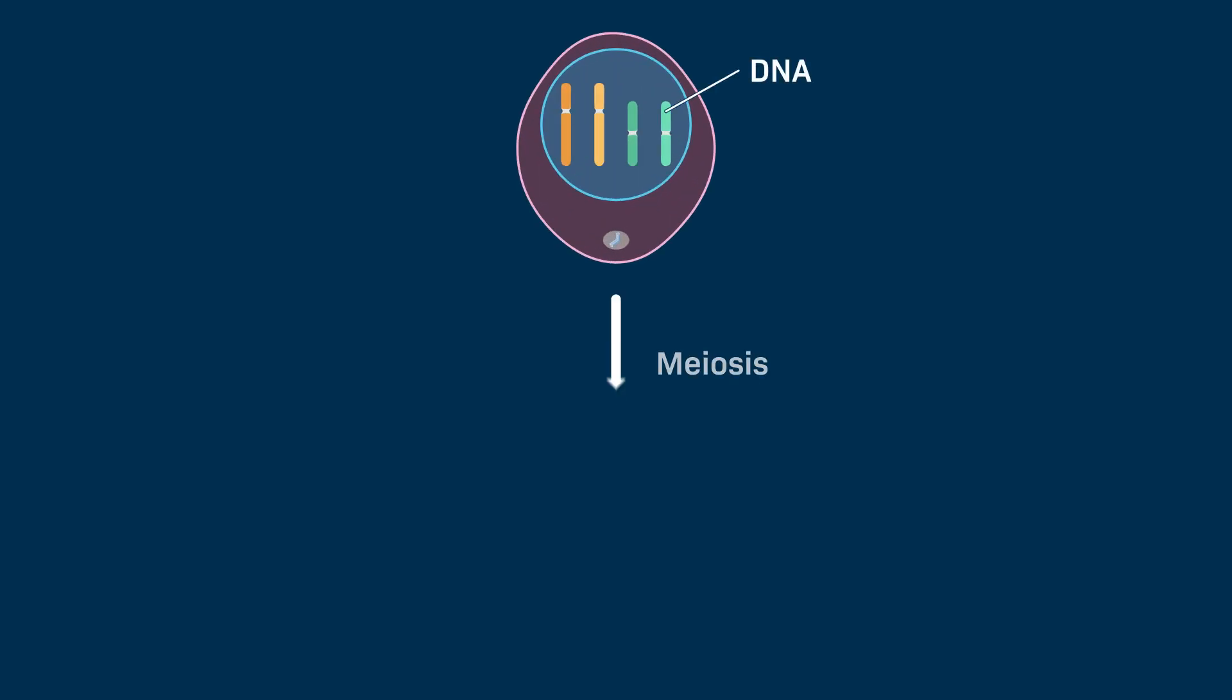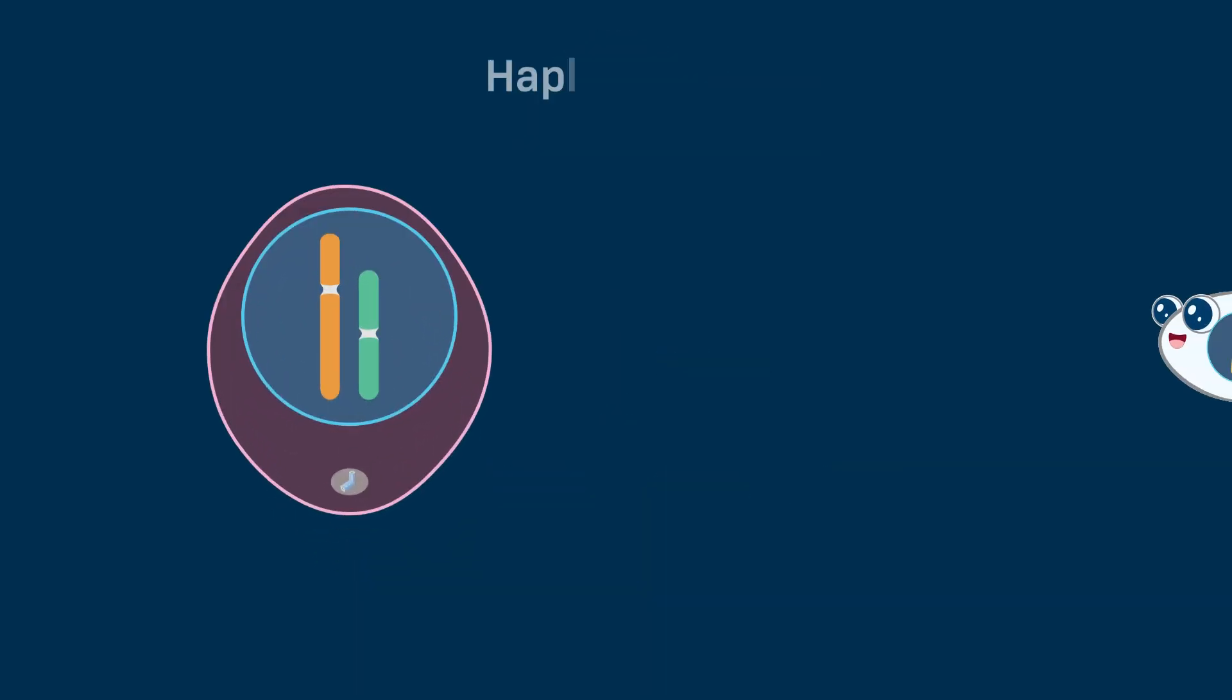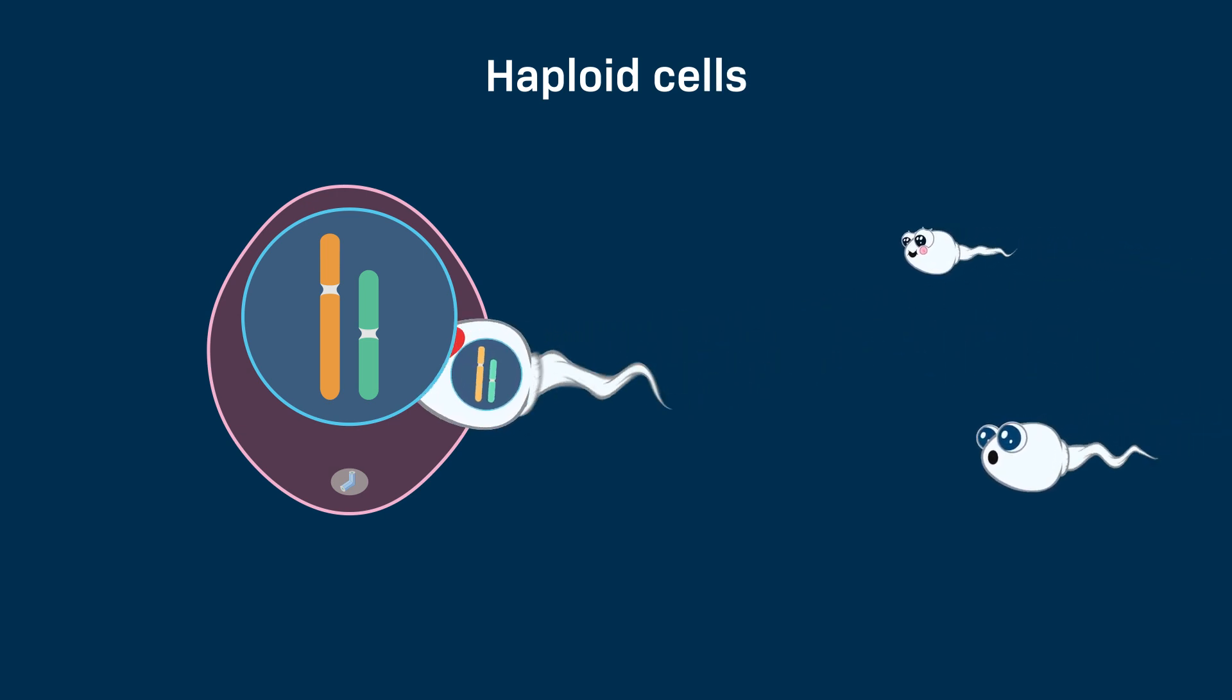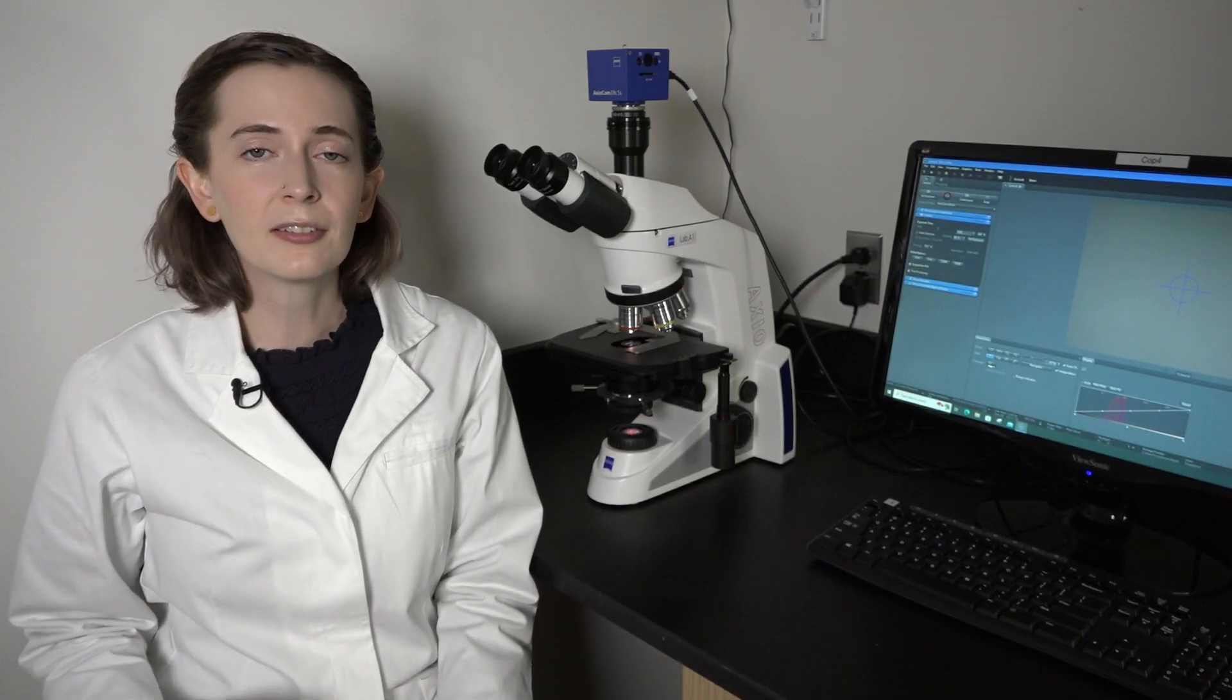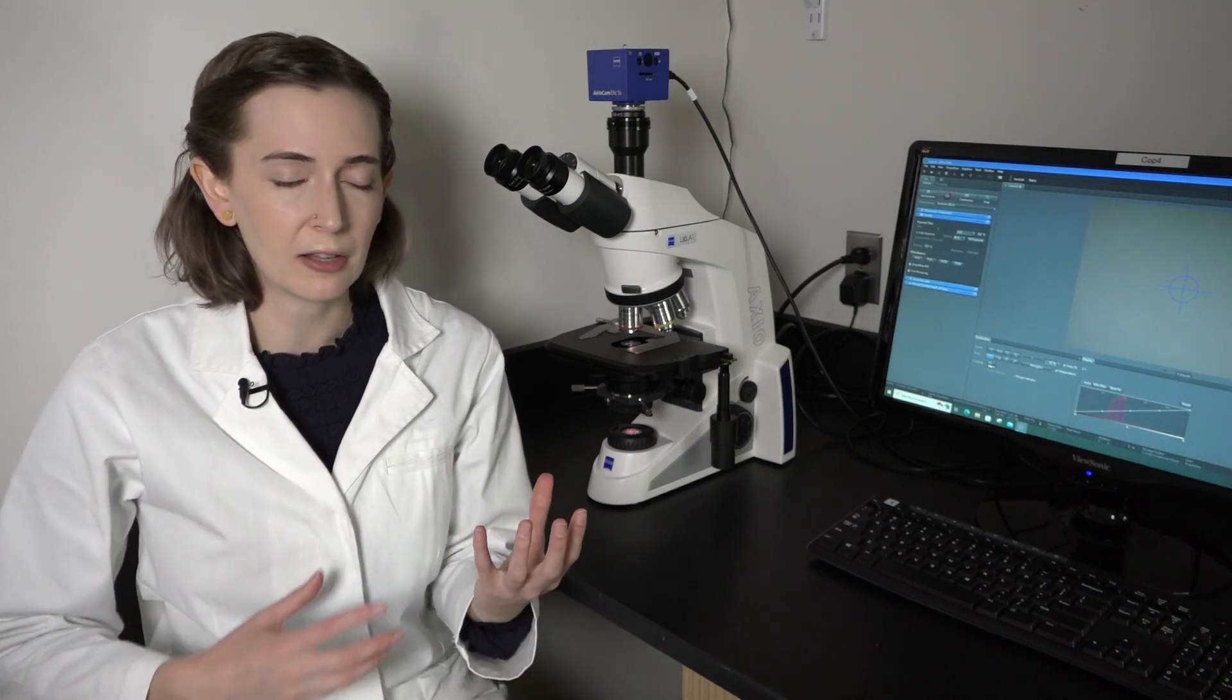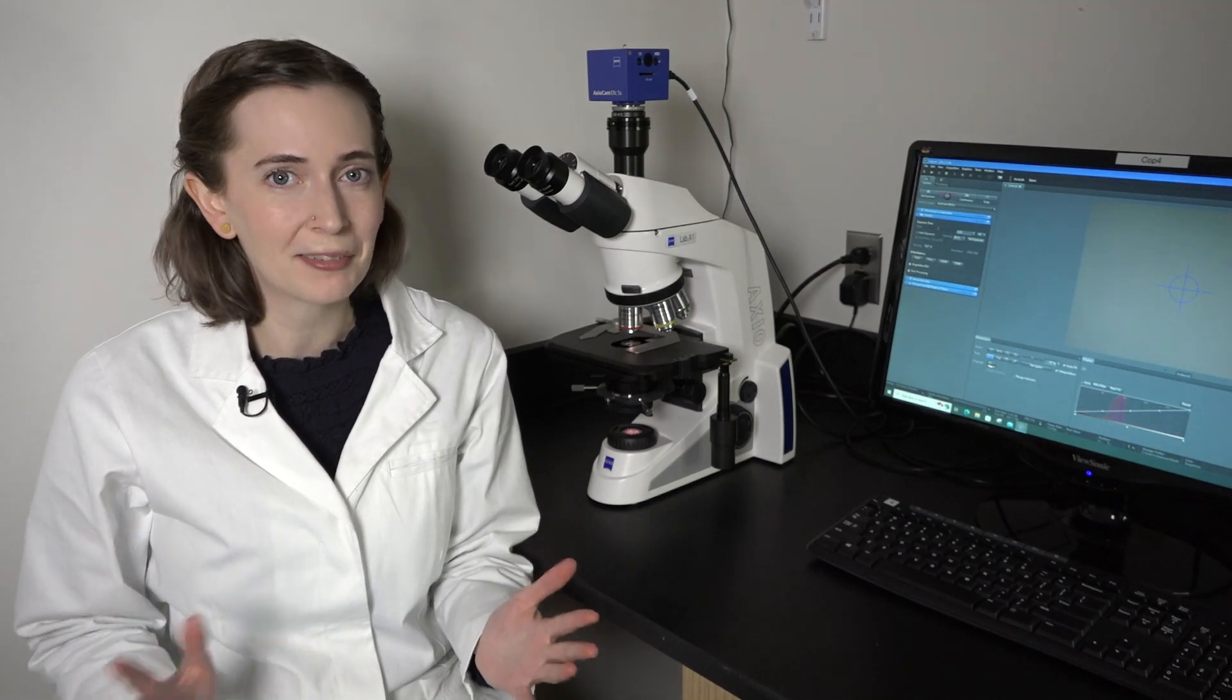The cells that result from a meiotic division have half the amount of DNA as the original cell. This allows haploid cells to unite during sexual reproduction to create a diploid zygote. Not only is the amount of DNA different between the original cell and those that result from meiosis, but the DNA sequences themselves are different.